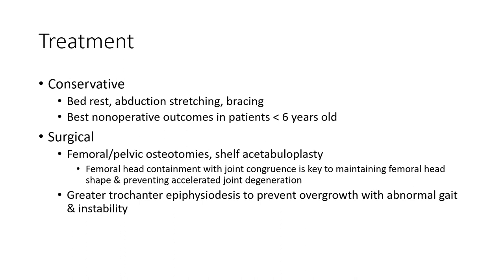Surgical options include femoral or pelvic osteotomy, shelf acetabuloplasty, and femoral head containment. Joint congruency is key to maintaining femoral head shape and preventing early joint degeneration. Greater trochanteric epiphysiodesis may be performed to prevent overgrowth with abductor abnormality and instability.